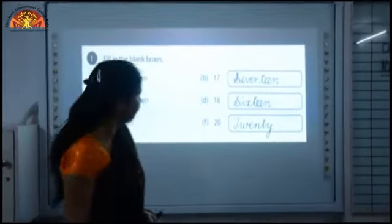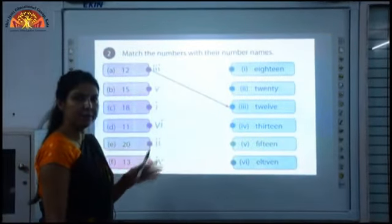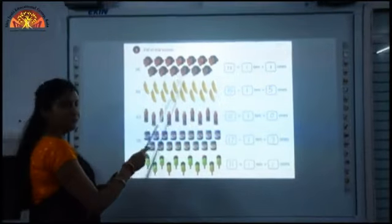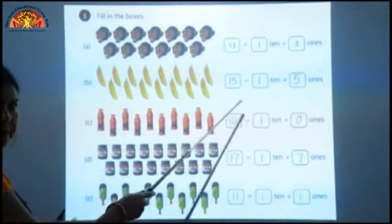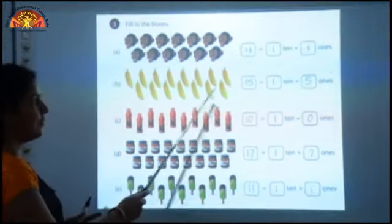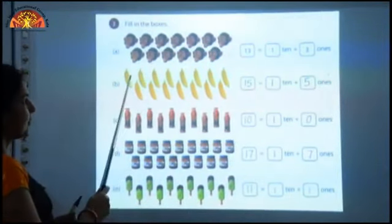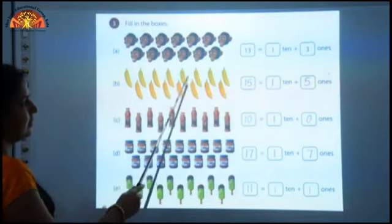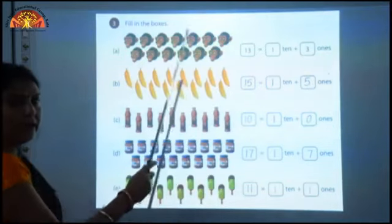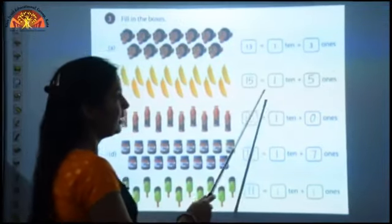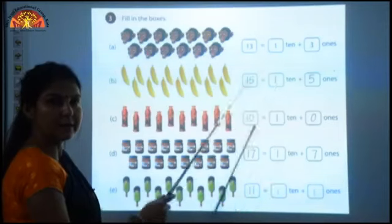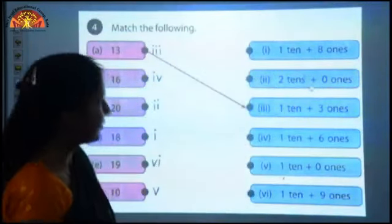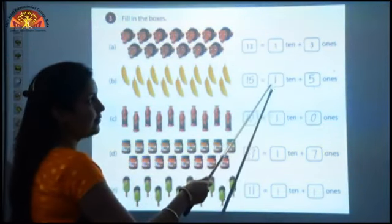Now come to question number 3 — fill in the boxes. Children, here a few objects are given. You have to count these objects and write the number in the blank box. First of all count the objects. How many bananas are here? 1, 2, 3, 4, 5, 6, 7, 8, 9, 10, 11, 12, 13, 14, 15. There are 15 bananas. So we will write 15. Now we find out the place value — 5 is at 1's place, so we write 5 at 1's place, and 1 is at 10's place, so we write 1 in front of 10.